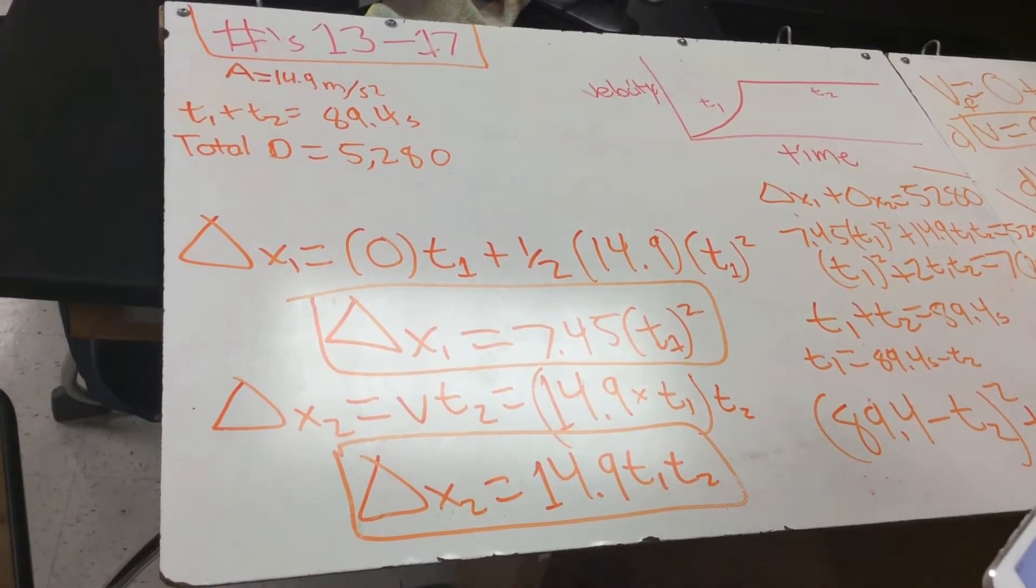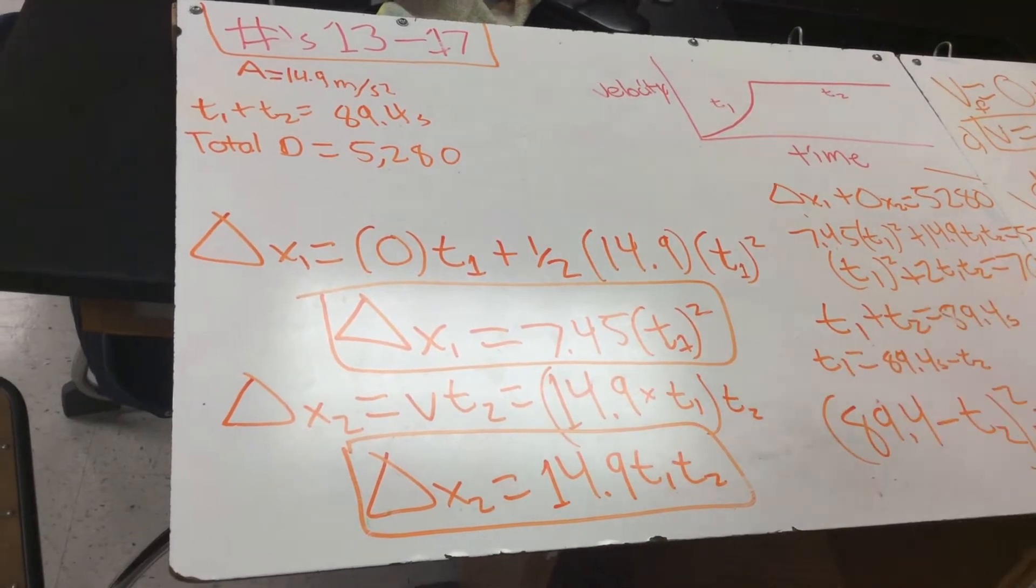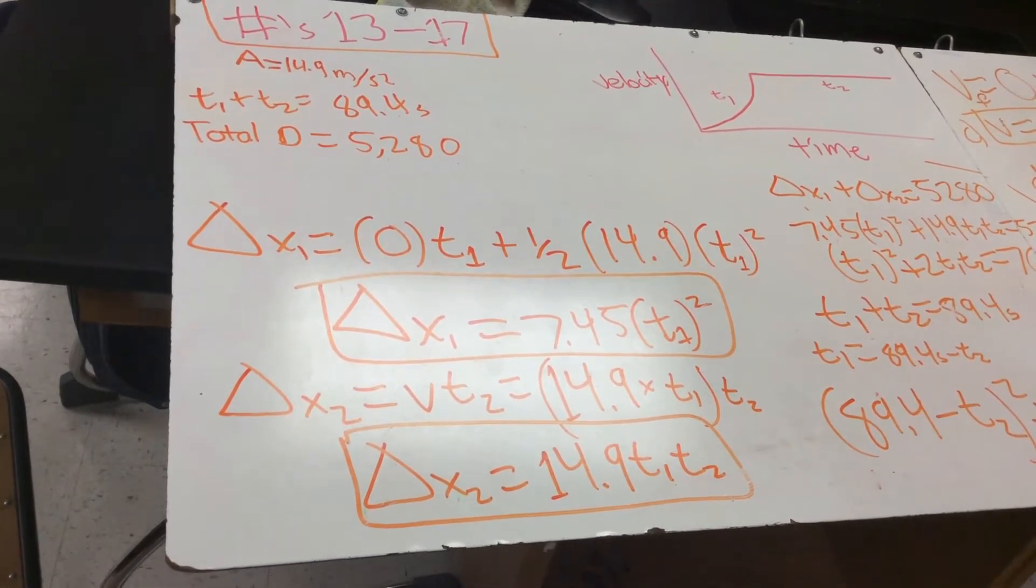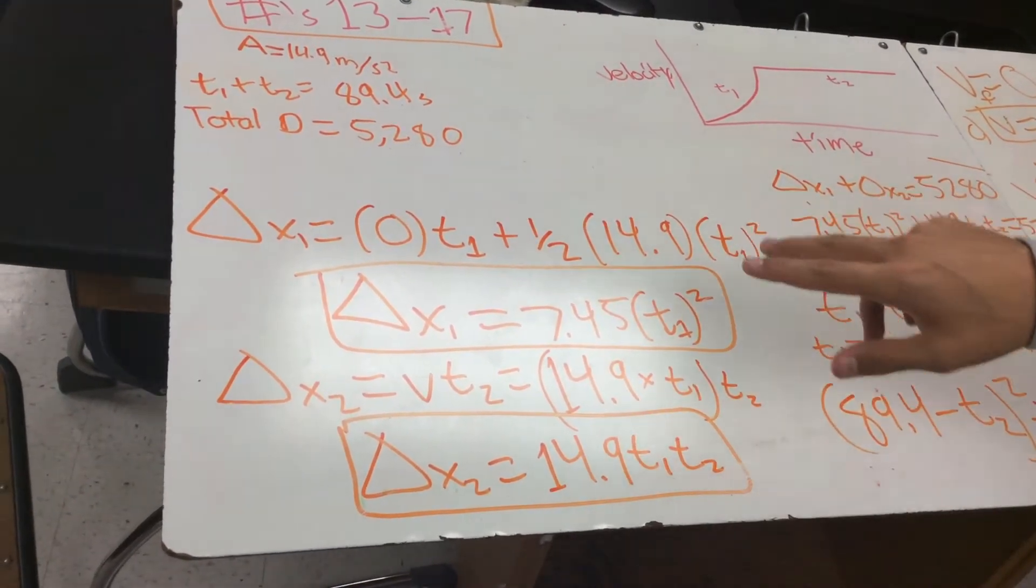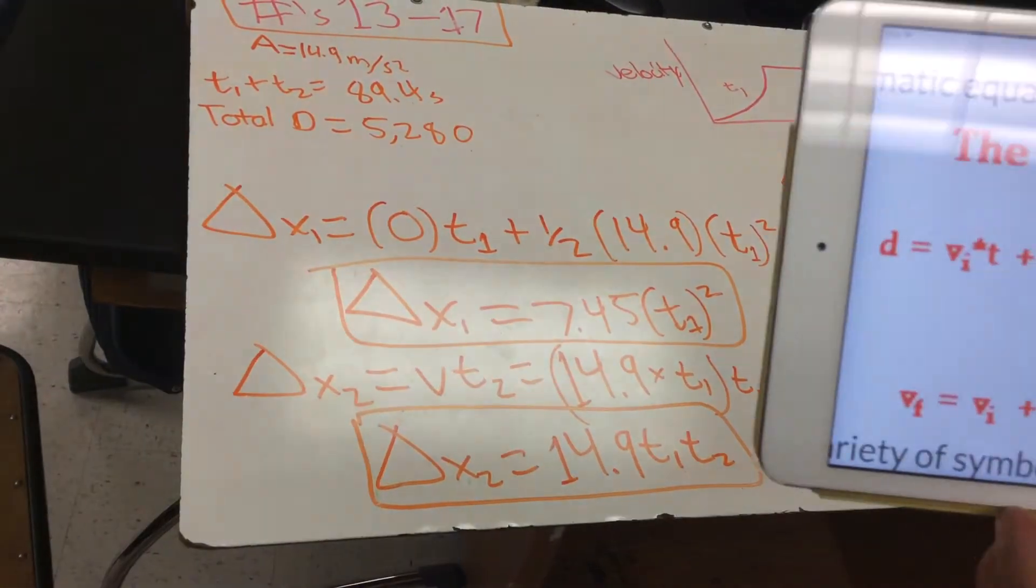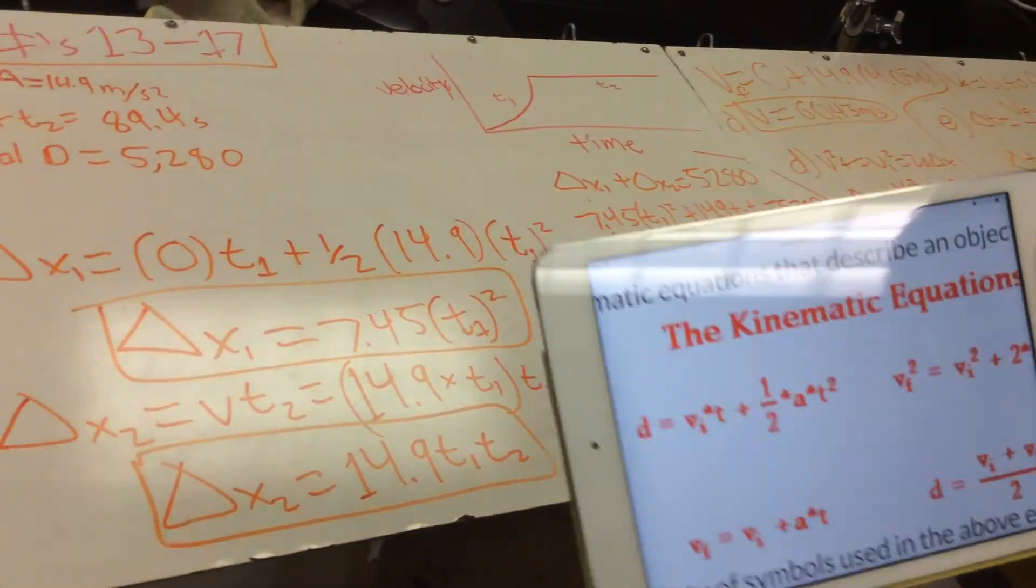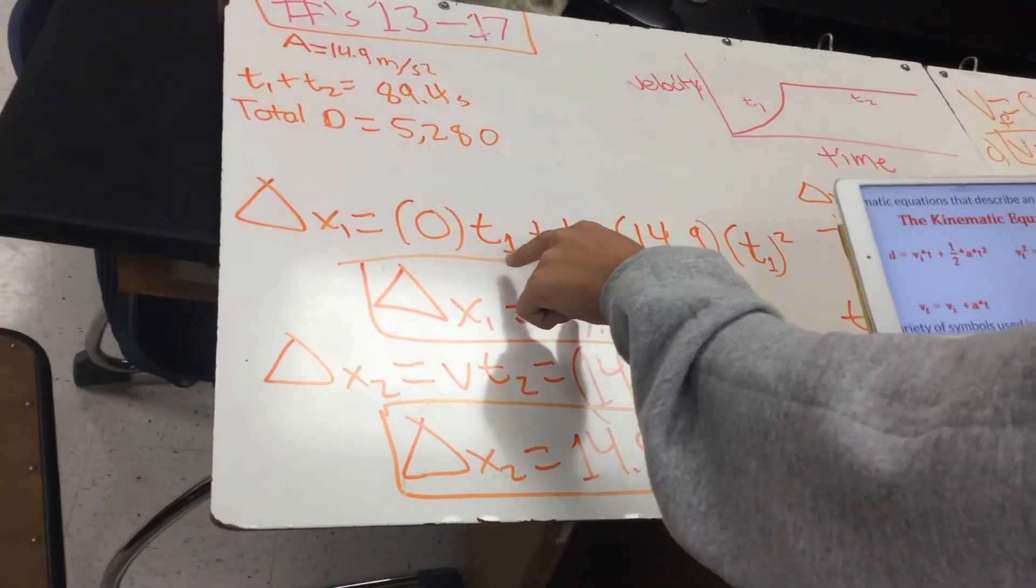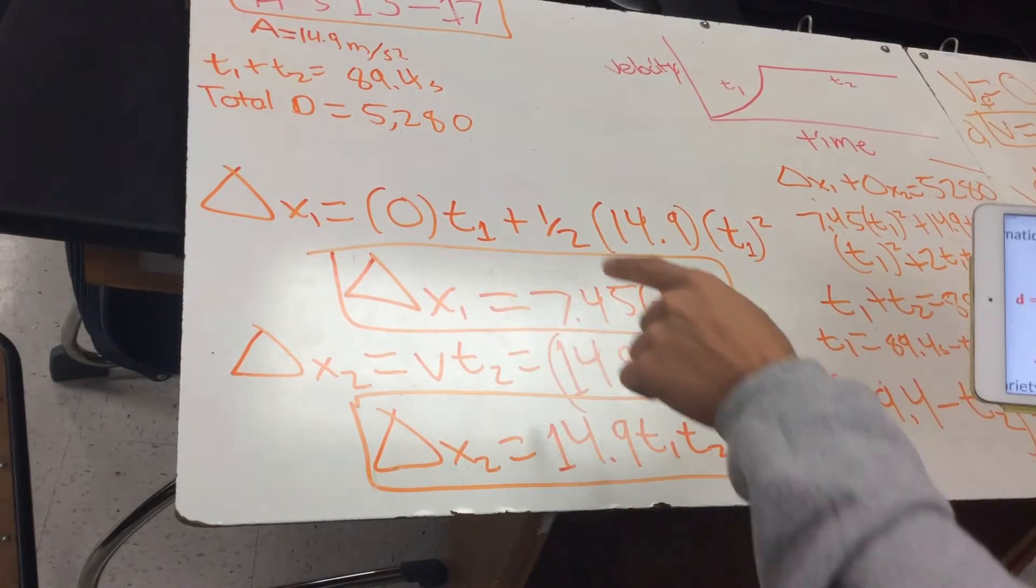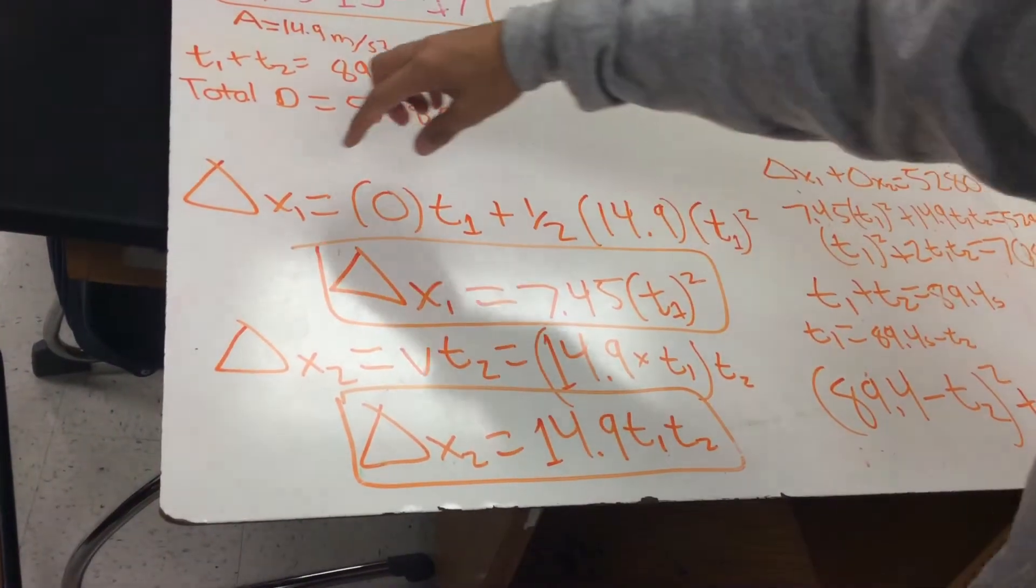And the first two parts ask for time 1 and time 2. So basically, to find time 1 and time 2, you're going to use this kinematic equation right here. It's the fourth one on that chart that you have. And if you plug it in here, so you'll use that fourth one, and you'll plug in what you have, the givens.